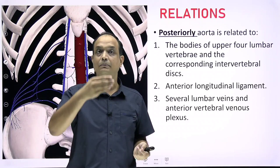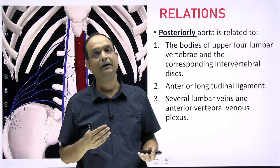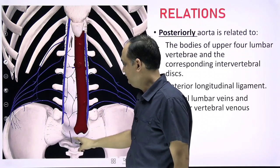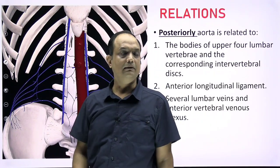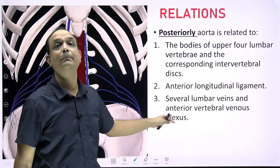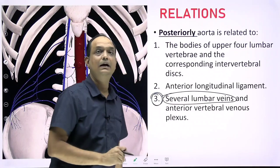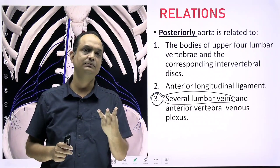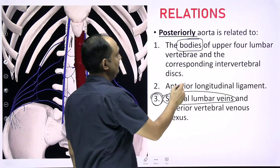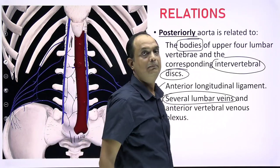Apart from the vertebral bodies, the vertebral areas have a thick band running throughout their length known as the anterior longitudinal ligament. In the image you can see this white-colored band — the anterior longitudinal ligament — going downward to the sacrum. Additionally, some lumbar veins lie posteriorly behind the abdominal aorta. So the three posterior relations are: bodies of the upper four lumbar vertebrae, intervertebral discs, the anterior longitudinal ligament, and some lumbar veins.